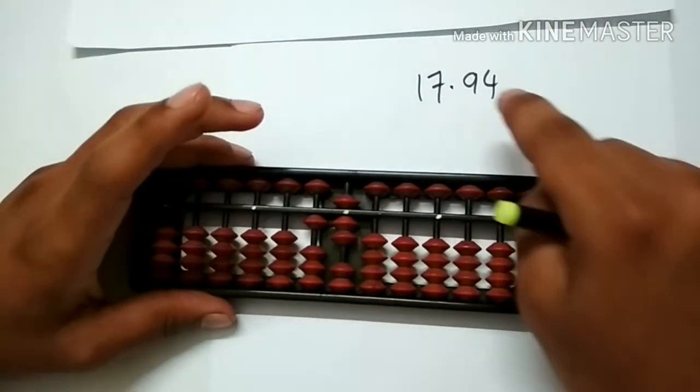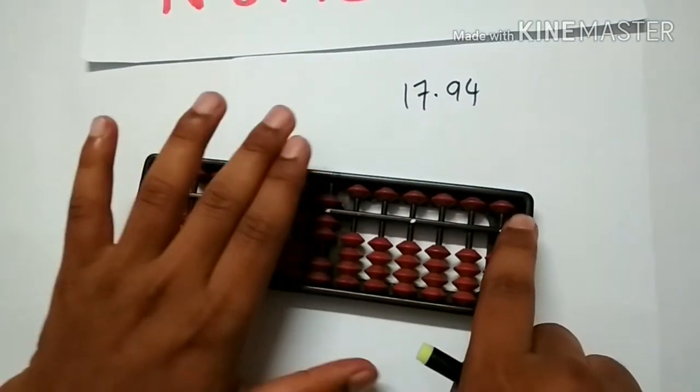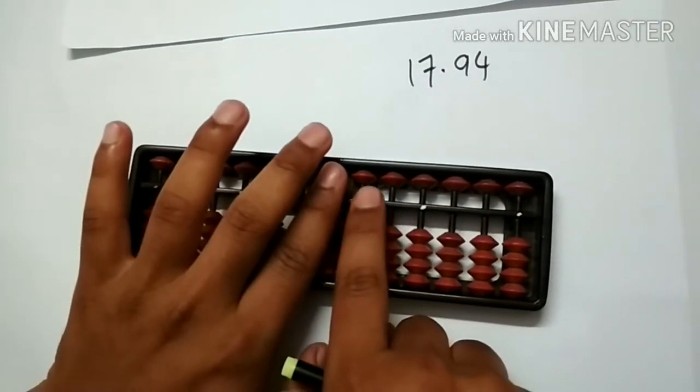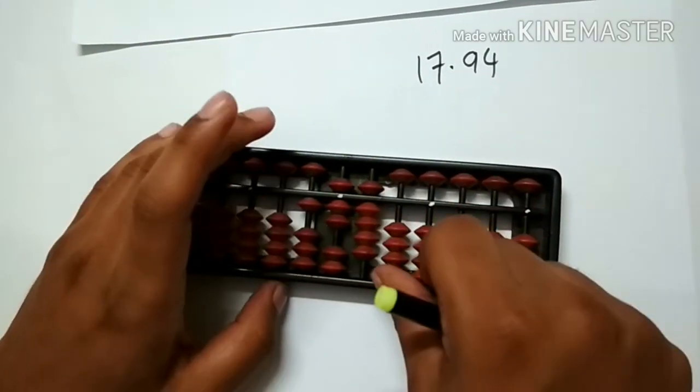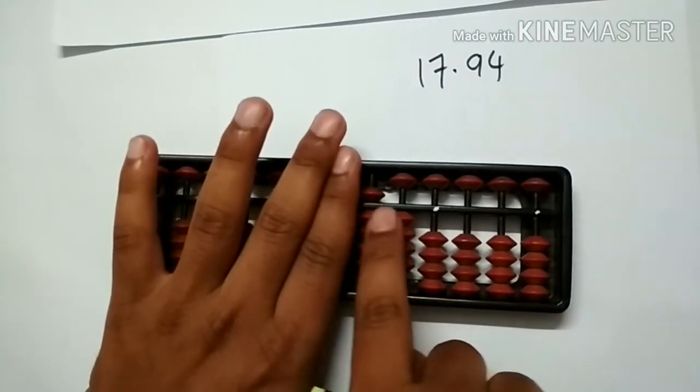To place 0.94 we have to use the rods to the right side of the units rod. So this is 17, now point with the beads to the right of the units rod. 17.94 - this is 17.94.